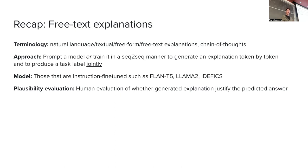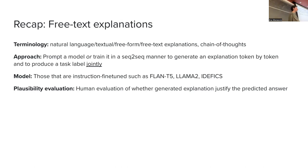For evaluation, we said we have plausibility — a subjective human assessment of whether the explanation justifies the prediction. For that, we'd go to crowdsourcing platforms like Amazon Mechanical Turk and ask annotators whether the explanation seems like a reasonable justification for the answer. I'll demo how to use Amazon Mechanical Turk in October or November when we have a session on human evaluation, because I'm a bit behind on time right now.